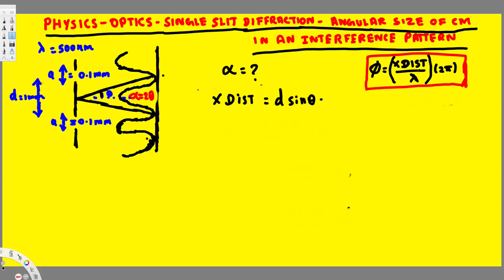Now we can go ahead and replace this x distance with d sine theta. So this is going to be phi is equal to d sine theta divided by lambda times 2 pi.